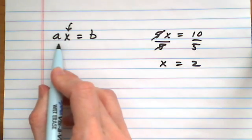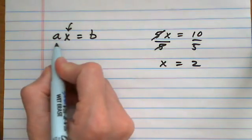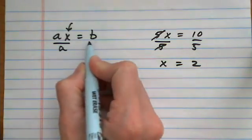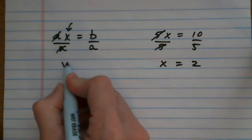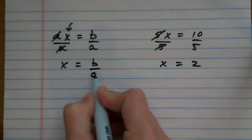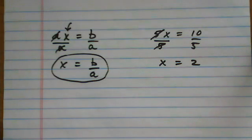I'm going to do the exact same thing with the letters. a is being multiplied to x, so I divide it off. Do the opposite operation of what's attaching it to the variable. That gives me x equals b over a, and that would be our final answer because we can't simplify that at all.